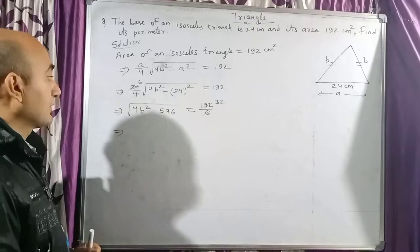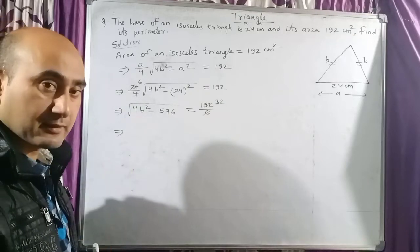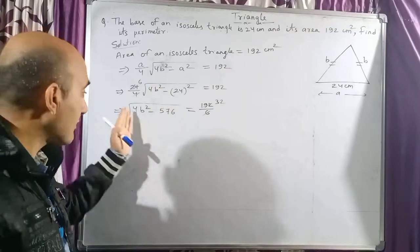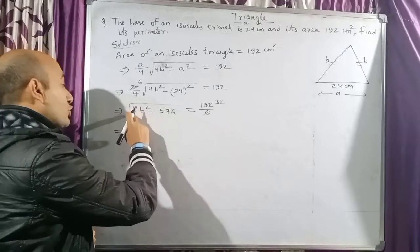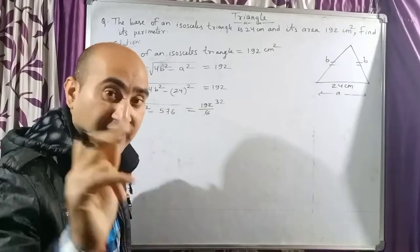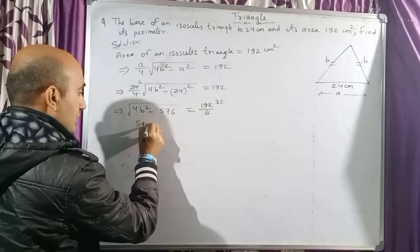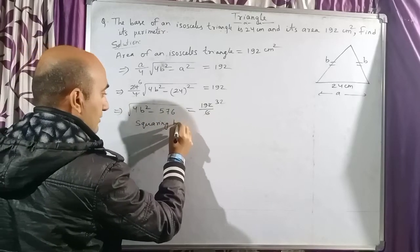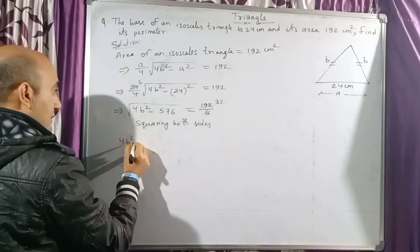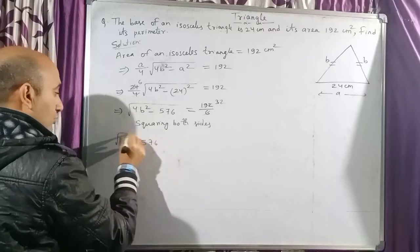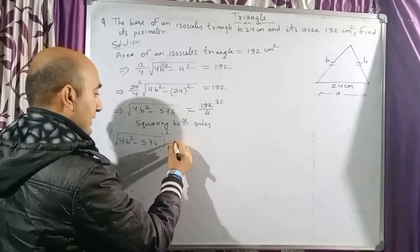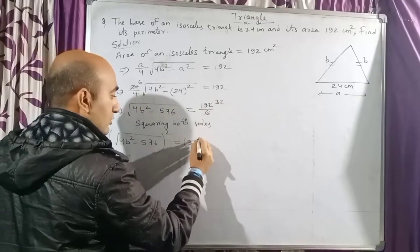Next, children, we have to find the value of b, and until and unless you don't remove this root over from here, you can't find the value of b. So to remove root over, we will do squaring both sides, because a root over can be removed only by squaring both sides. So you can write: squaring both sides. So (√(4b² - 576))² = 32².